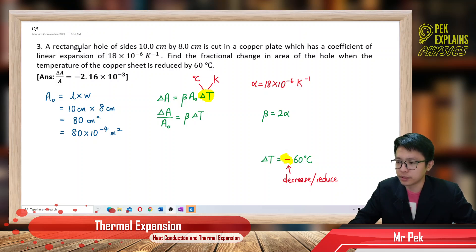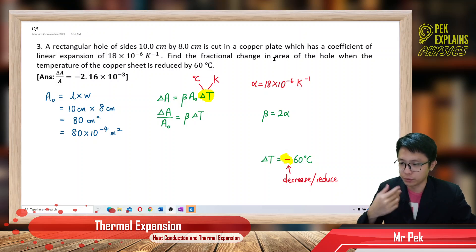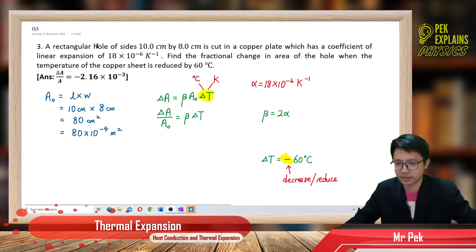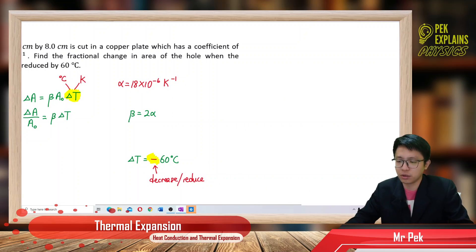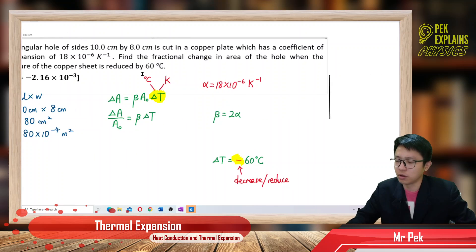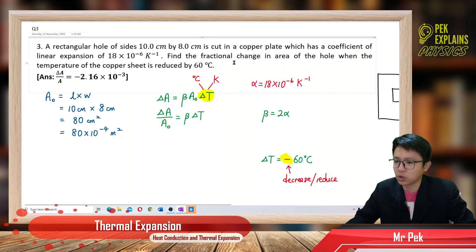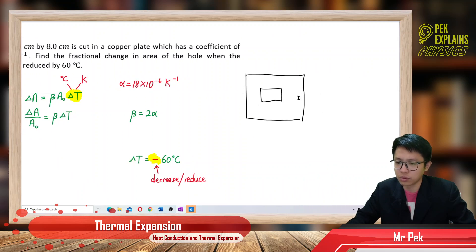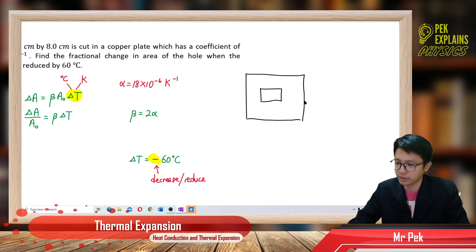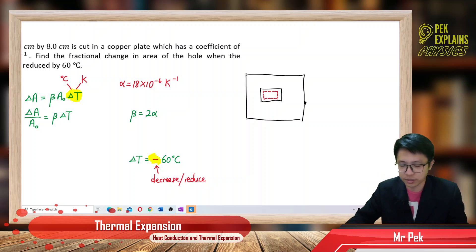Now, the hole — this is about area expansion. We have a copper sheet with a rectangular hole cut in it. The temperature is reduced by 60 degrees Celsius, meaning you lower the temperature. Because you lower the temperature, the area will shrink — will become smaller. So we are talking about the area changes here when you lower down the temperature.